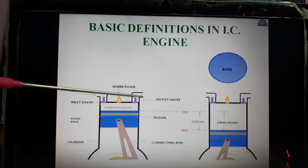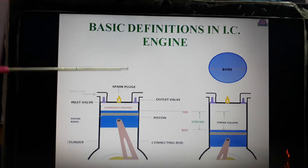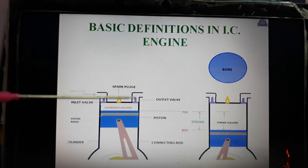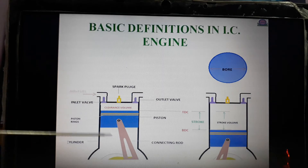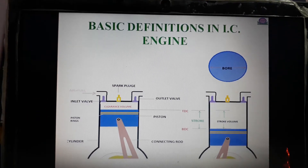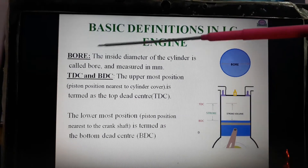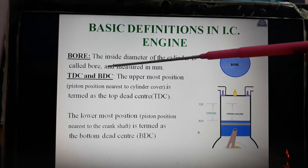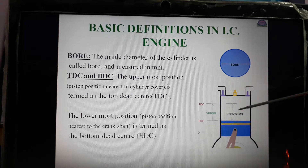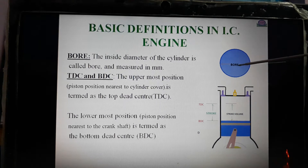This is the line diagram of an IC engine. What is bore? The inside diameter of the cylinder is called bore. Cylinders are cylindrical in shape — we can see the top view and the cylindrical shape. We can see the inside diameter of the cylinder, that is the bore. It is measured in mm.